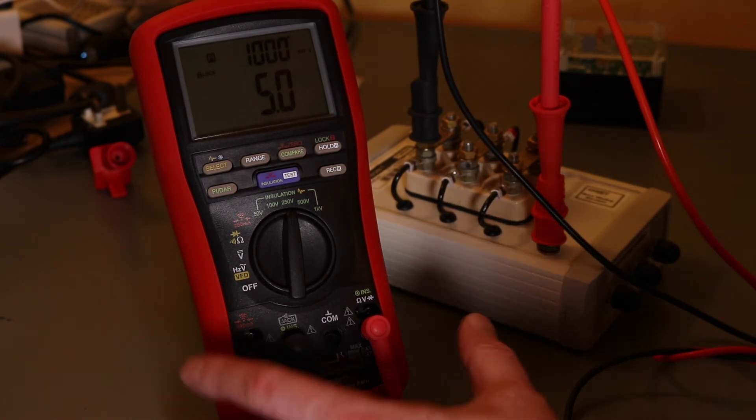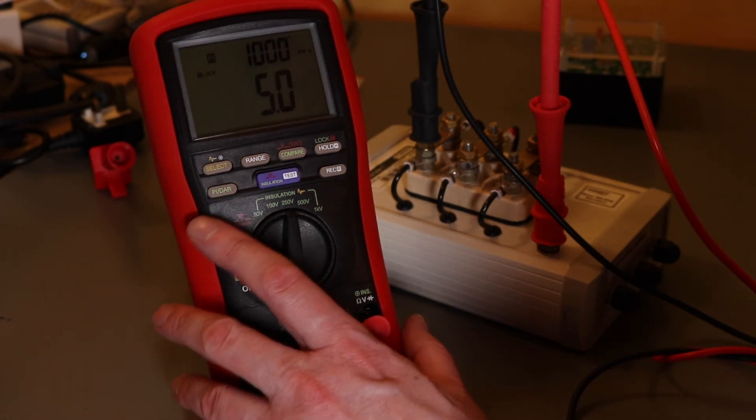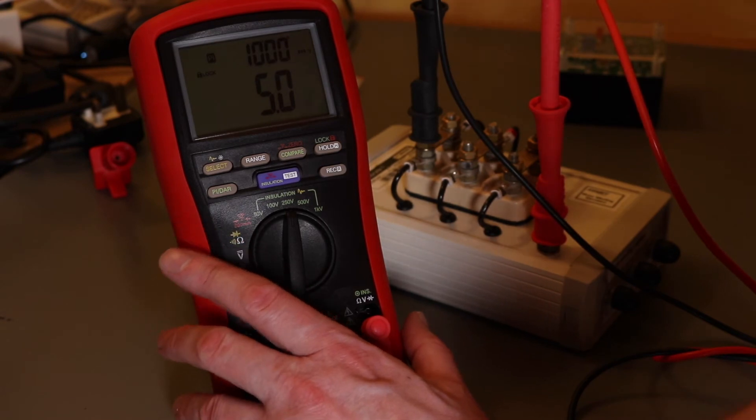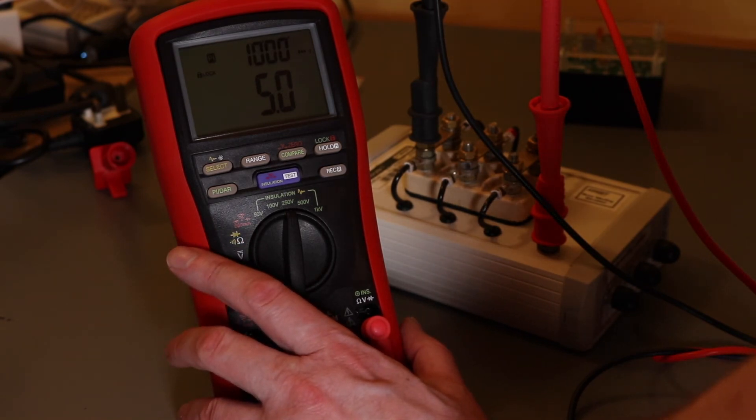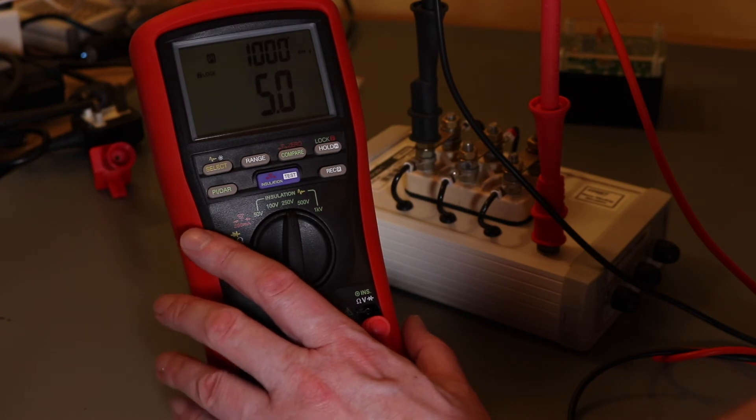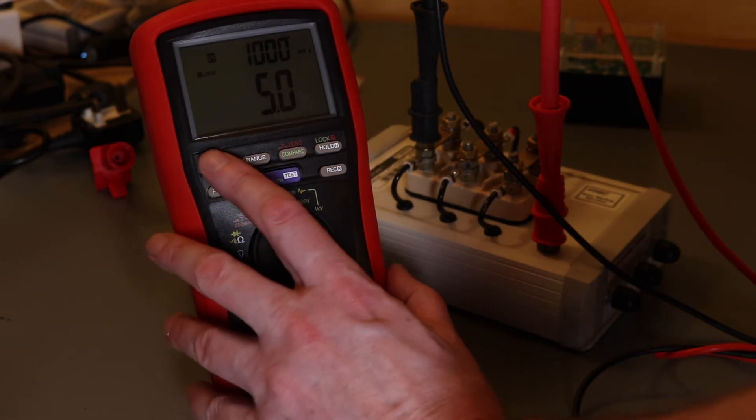I can't get back to any of the other test values. A lot of meters will let you page back through the 1 minute and the 10 minute insulation readings and then the actual index value. But this meter doesn't let you do that.